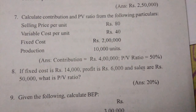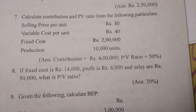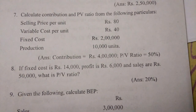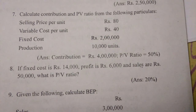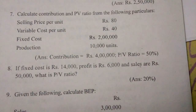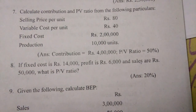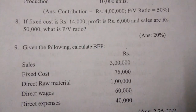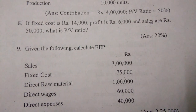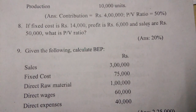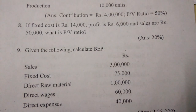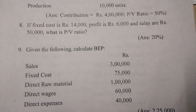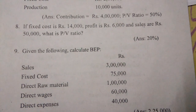Seventh one: calculate contribution and PV ratio from the following particulars — selling price per unit 80 rupees, variable cost per unit 40 rupees, fixed cost two lakhs, production ten thousand units — contribution is four lakhs, PV ratio is 50%. Eighth one: if fixed cost is 14,000 rupees, profit is 6,000 rupees, and sales are 50,000 rupees, what is PV ratio? — 20%.